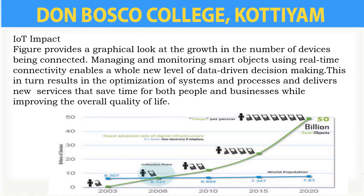In the olden days, the number of devices connected to the internet was very less. But now the devices are able to take decisions of their own. We can calculate the data and they are able to take decisions of their own.